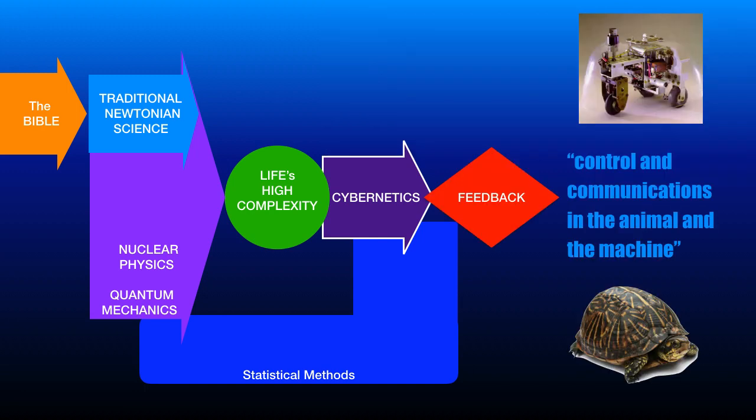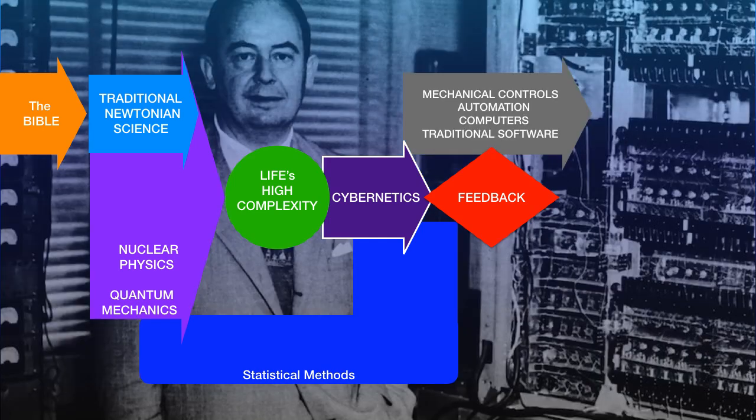The main idea behind cybernetics was feedback, so cybernetics split into two areas connected by the same notion. The initial thrust of cybernetics was directed at mechanical controls. Feedback solved automation, which brought computers and traditional reductionist software.